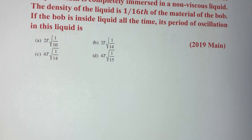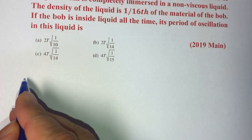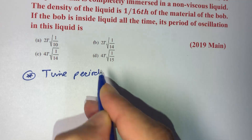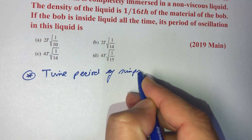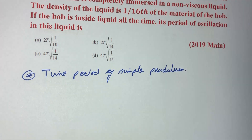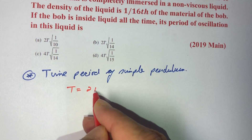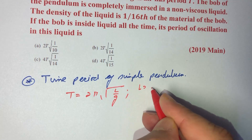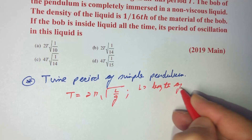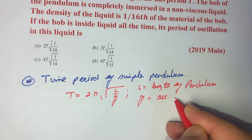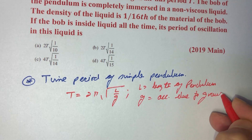The standard formula for the time period of a simple pendulum is given as T = 2π√(l/g), where l is the length of the pendulum and g is the acceleration due to gravity. This is when the pendulum is in air.